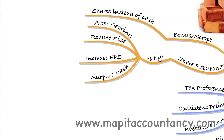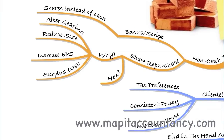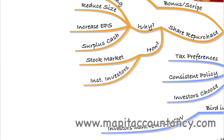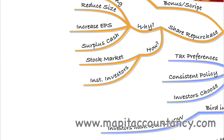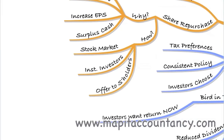Share repurchases are often seen as a way to use surplus cash, but the market can view them negatively — suggesting management have run out of ideas and should instead be reinvesting to generate more profit. Repurchases can take place by buying shares on the stock market, buying from institutional investors such as pension funds and insurance companies, or making an offer to all shareholders.